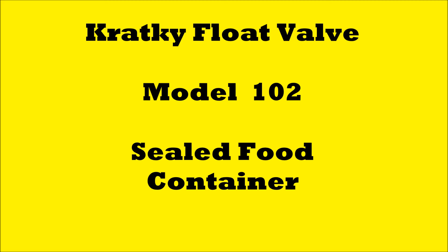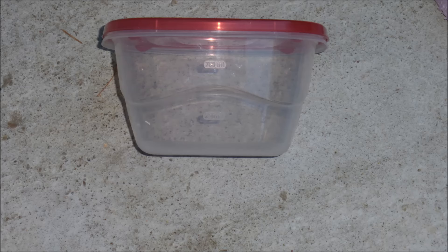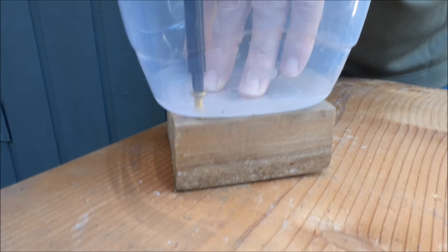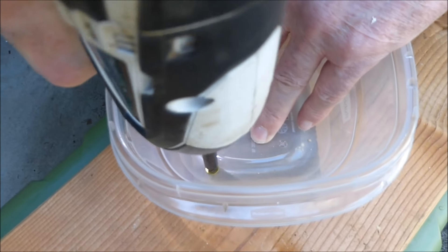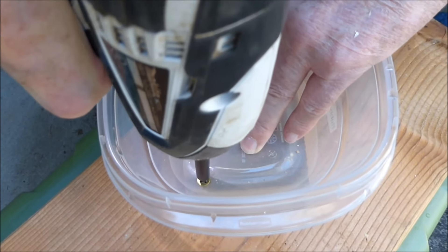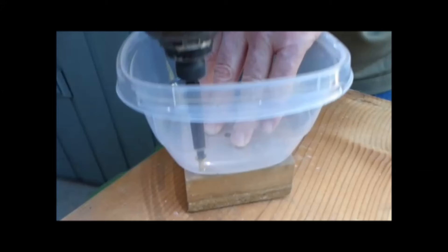Now let's turn our attention to model 102, the sealed food container. I bought two polypropylene sealable food containers at a dollar store for a dollar. Attach a 4 inch length of untreated 2x4 to the container bottom with two screws, being careful not to crack the plastic. The 2x4 lumber helps to stabilize the nozzle in a vertical position and keeps the float valve weighted down.